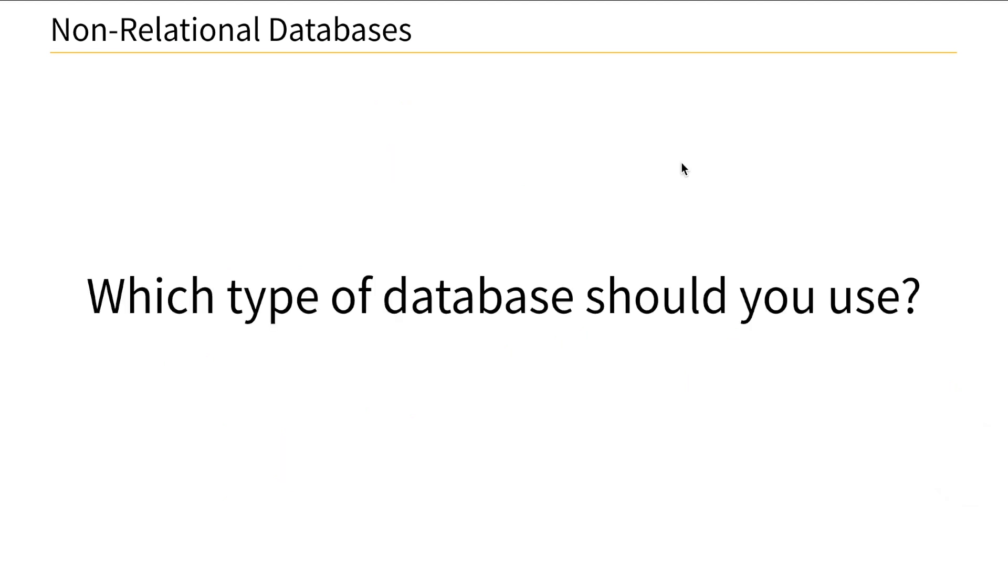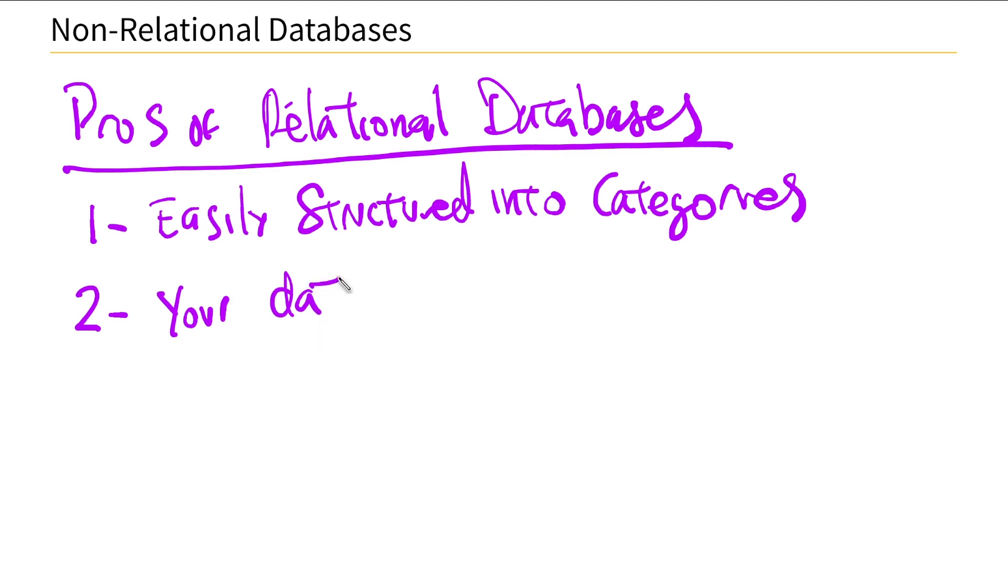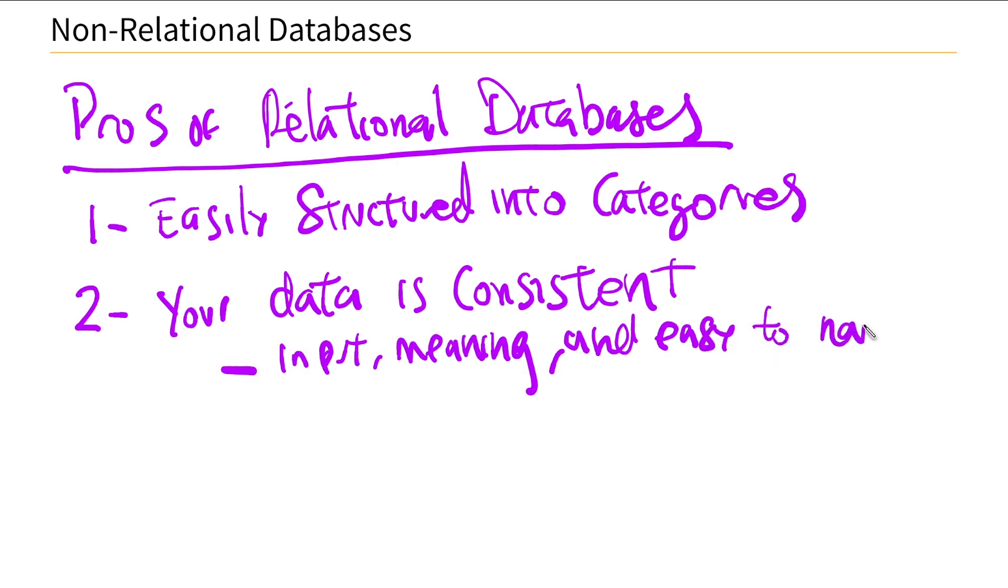So which type of database should you use and when? That's an important question. So let's dive into that. Let's start with the pros of relational databases. First, your data is easily structured into categories. And your data is consistent with input. And it's easy to navigate.